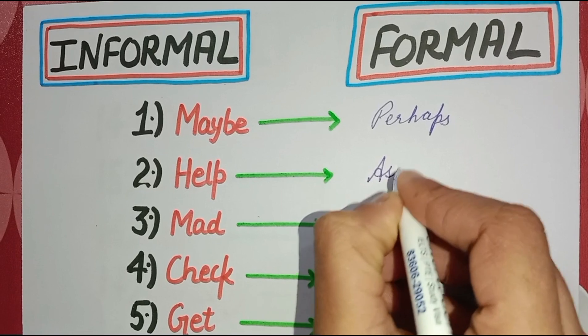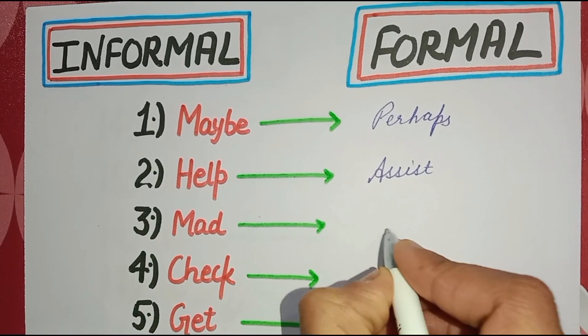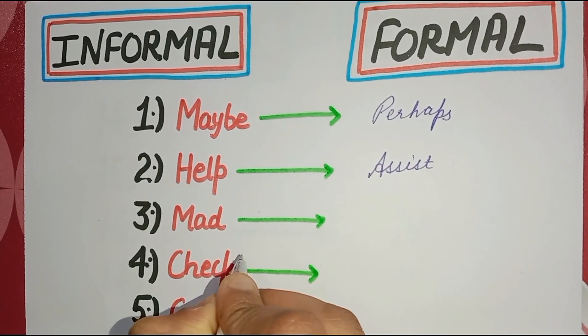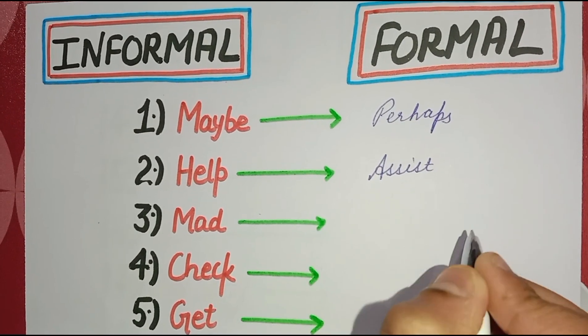Second word is 'help' - you can say 'assist'. Third is 'mad', but you don't use the word 'mad', you can say 'insane'. Fourth word is 'check', you can say or write 'verify'.